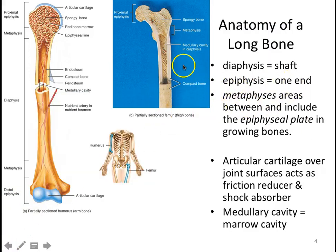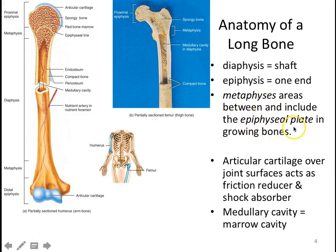The metaphysis is the area in between the epiphysis and the diaphysis. If you think of the epiphysis as the head and the diaphysis as the body, the metaphysis would be the neck — it's between the two. The metaphysis also includes the epiphyseal plate, which is your growth plate, where your bones are going to be growing. We also have articular cartilage covering the joint surfaces, helping make movement smooth and shock-free.